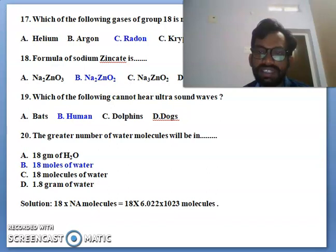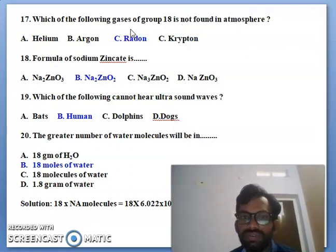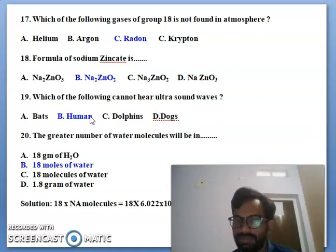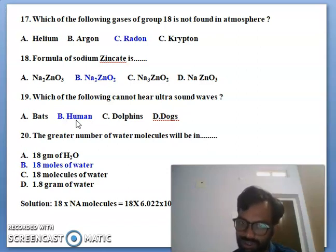Next 17th one, you can see here, which of the foreign gases of group 18 is not found in the atmosphere. So here helium, argon, radon and krypton. So radon you can't find in the atmosphere. So molecular formula of sodium zincate, sodium zincate molecular formula is Na2ZnO2. Which of the following cannot hear ultrasound waves? So bats will hear the ultrasound, dolphin and dogs, but the human beings can't hear the ultrasound. So here is the right answer is B.